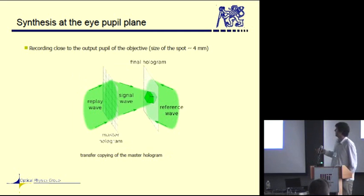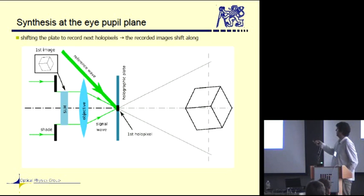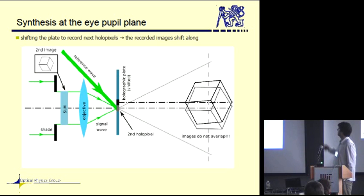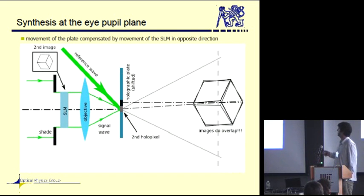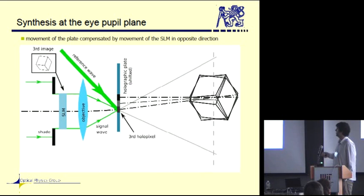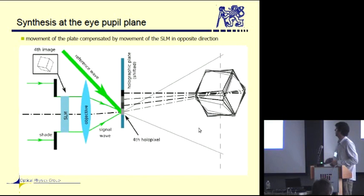As we were building the device, it was necessary to decide what should move. Because we wanted the laser beams to stay in a place, we decided to move the plate, which brings some troubles. If you record the pixel like this, then you shift the plate, you also shift the image that has been already recorded. We solve this by moving the special light modulator in the opposite direction than the plate moves. The step of the special light modulator is smaller by the ratio of the magnification of the objective.